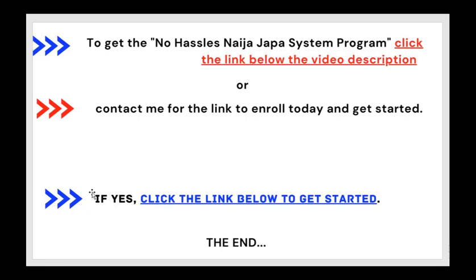If you are interested in becoming a Canadian citizen, you can apply in under three years of staying in Canada. That is all for today. To get started with the No Hassle Japa System program, click the link below the video description or contact me to get the program today. My email is below the video description where you can get all the promised resources. If you're ready, click the link below, get started, and please like this video and subscribe if you've gotten value from this.